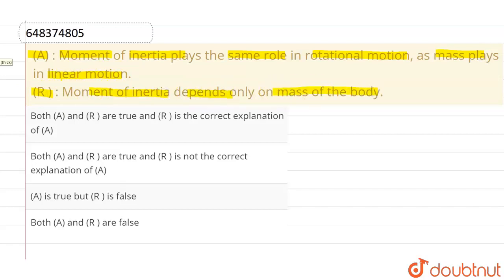So first thing we know that the kinetic energy or rotational kinetic energy is given by half I omega square, whereas the translational kinetic energy is given by half mv square.